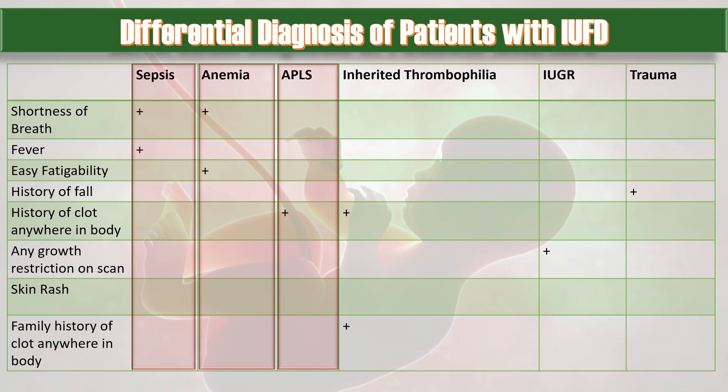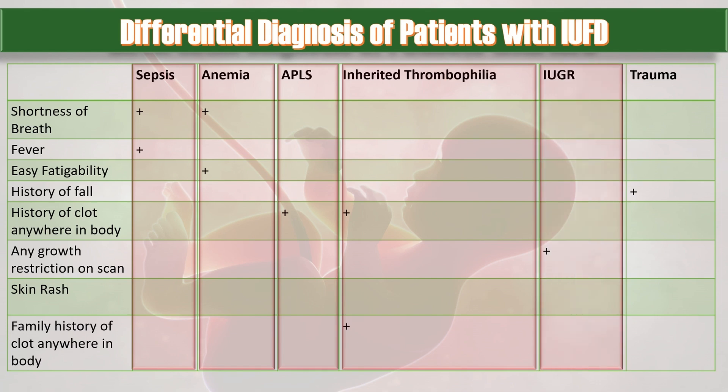We have to focus on the specific case given in the scenario. Second trimester IUFD due to any placental cause may indicate APLS, which may also fit this scenario. We have to rule out inherited thrombophilia by asking about history of clots anywhere in the body or family history of thrombophilia. Any growth restriction on scan may indicate IUGR. History of trauma is also a very important cause of IUFD.